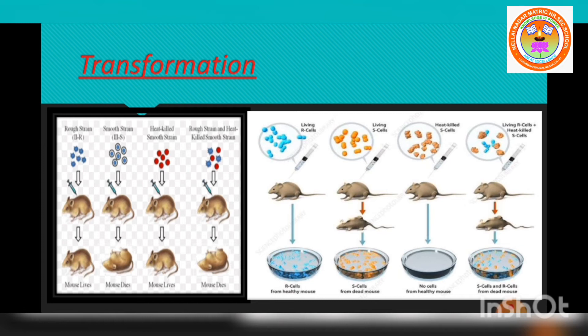When heat-killed S-type cells were mixed with live R-type cells and injected, the mouse died. The avirulent rough strain of Diplococcus had been transformed into S-type cells. The hereditary material of heat-killed S-type cells had transformed R-type cells into virulent smooth strains. The phenomenon of changing the character of one strain by transferring the DNA of another strain into it is called transformation.